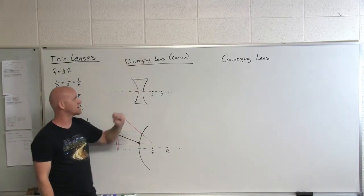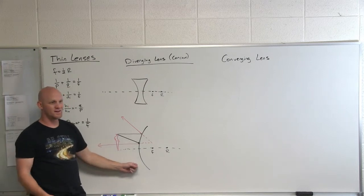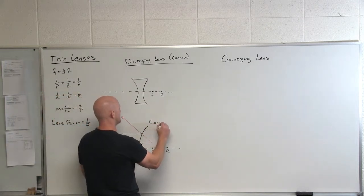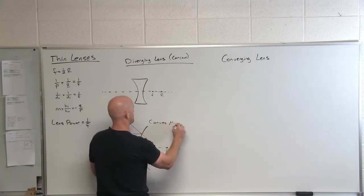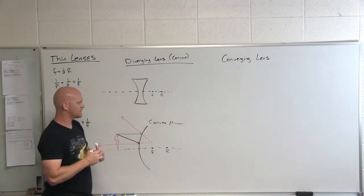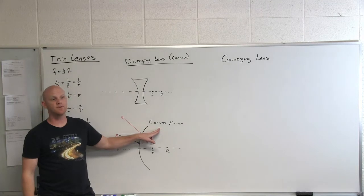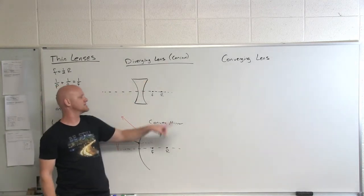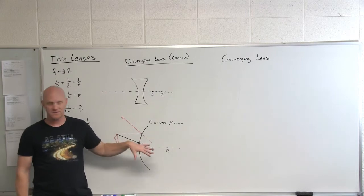But we'll find out that the diverging lens, the concave lens, is going to go analogous to the convex mirror that we just dealt with. And so if you notice, a convex mirror is sometimes also called a diverging mirror. So this is a diverging lens and a diverging mirror, but it's a concave lens versus a convex mirror.